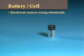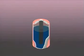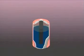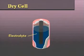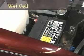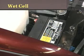Let's take a closer look at how a cell operates. All cells contain two different terminals, or electrodes, immersed in a chemical solution called an electrolyte. The electrolyte is either a paste or a liquid. A cell with electrodes immersed in a paste is called a dry cell. The automobile battery uses a liquid electrolyte solution and is called a wet cell battery.